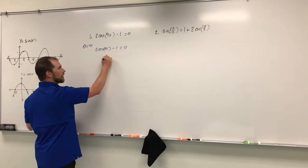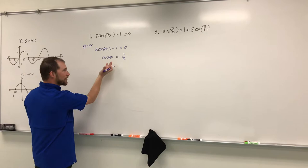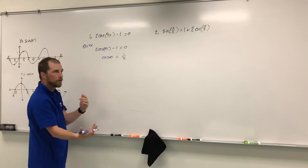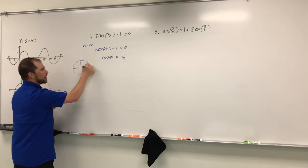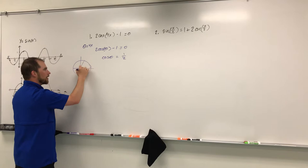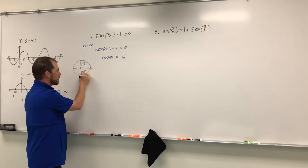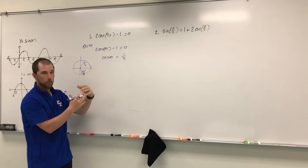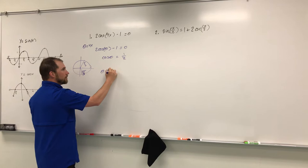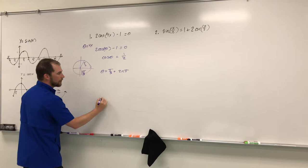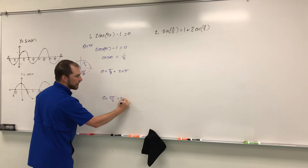Solving for theta, we need to isolate the trig function. Moving the 1 and dividing by 2, cosine theta equals 1/2. Since cosine is our x value on the unit circle, we look for where cosine equals 1/2. That gives us pi over 3 and 5 pi over 3. Looking at infinite solutions, theta equals pi over 3 plus 2n pi, and theta equals 5 pi over 3 plus 2n pi.